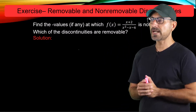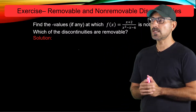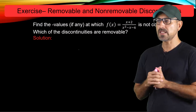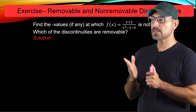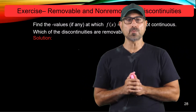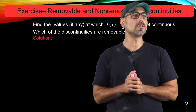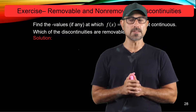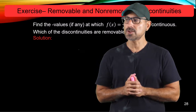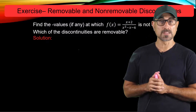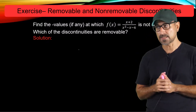The given function is a rational function. The top piece is a polynomial, as well as the bottom piece, which is a quadratic. To investigate points where the function has removable or non-removable discontinuities, we're going to check if the bottom of the function becomes 0 for certain x values.